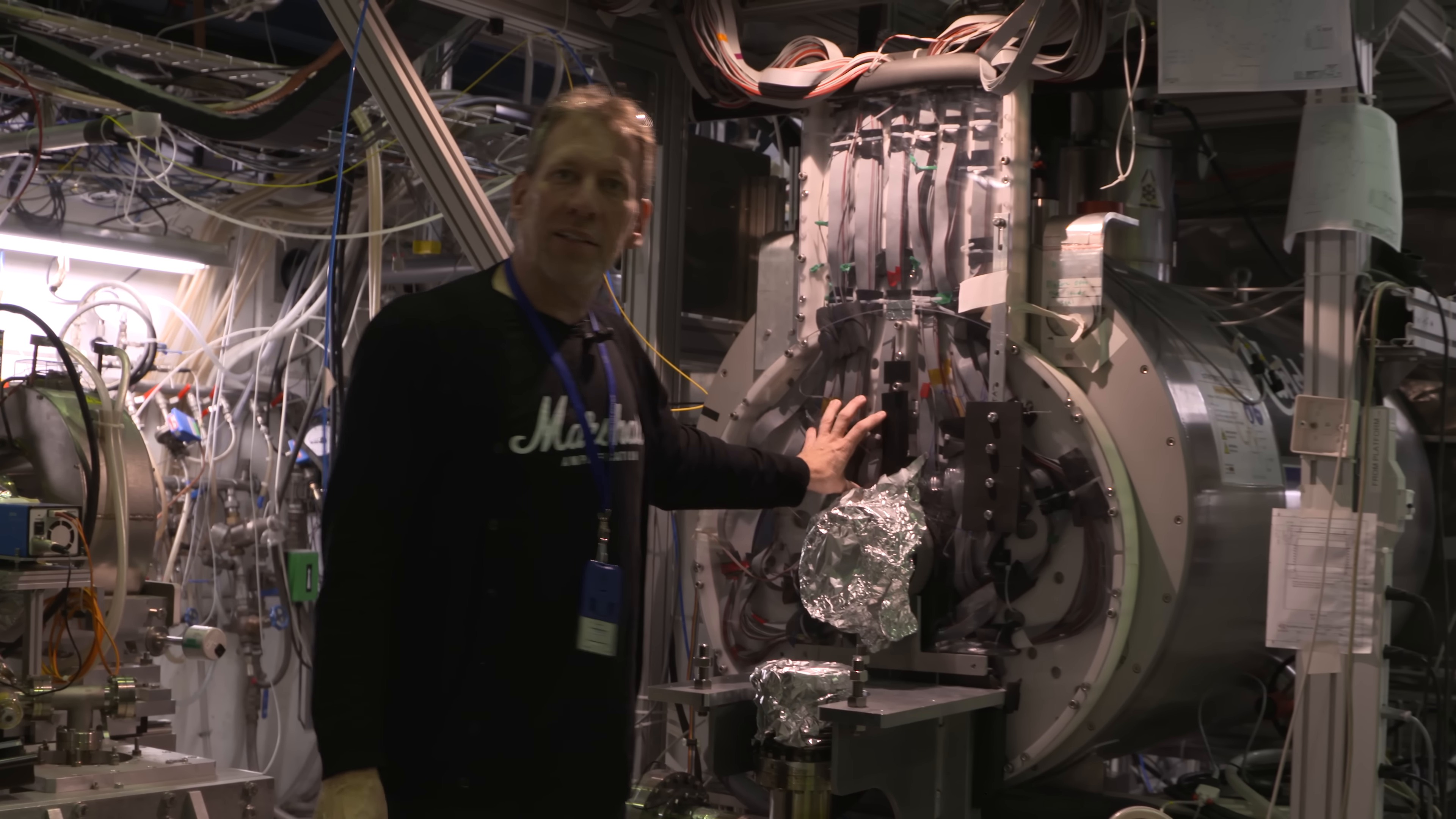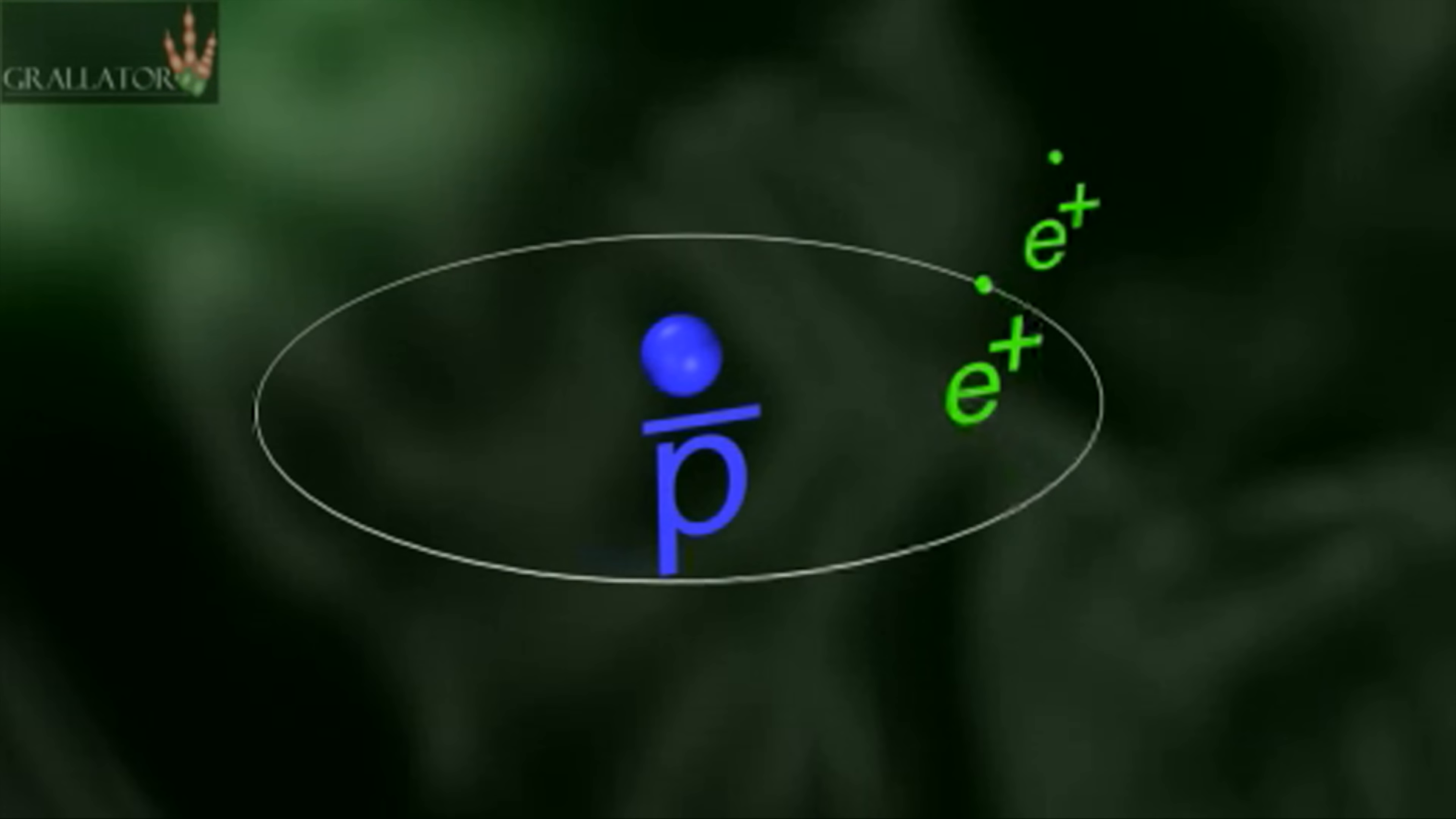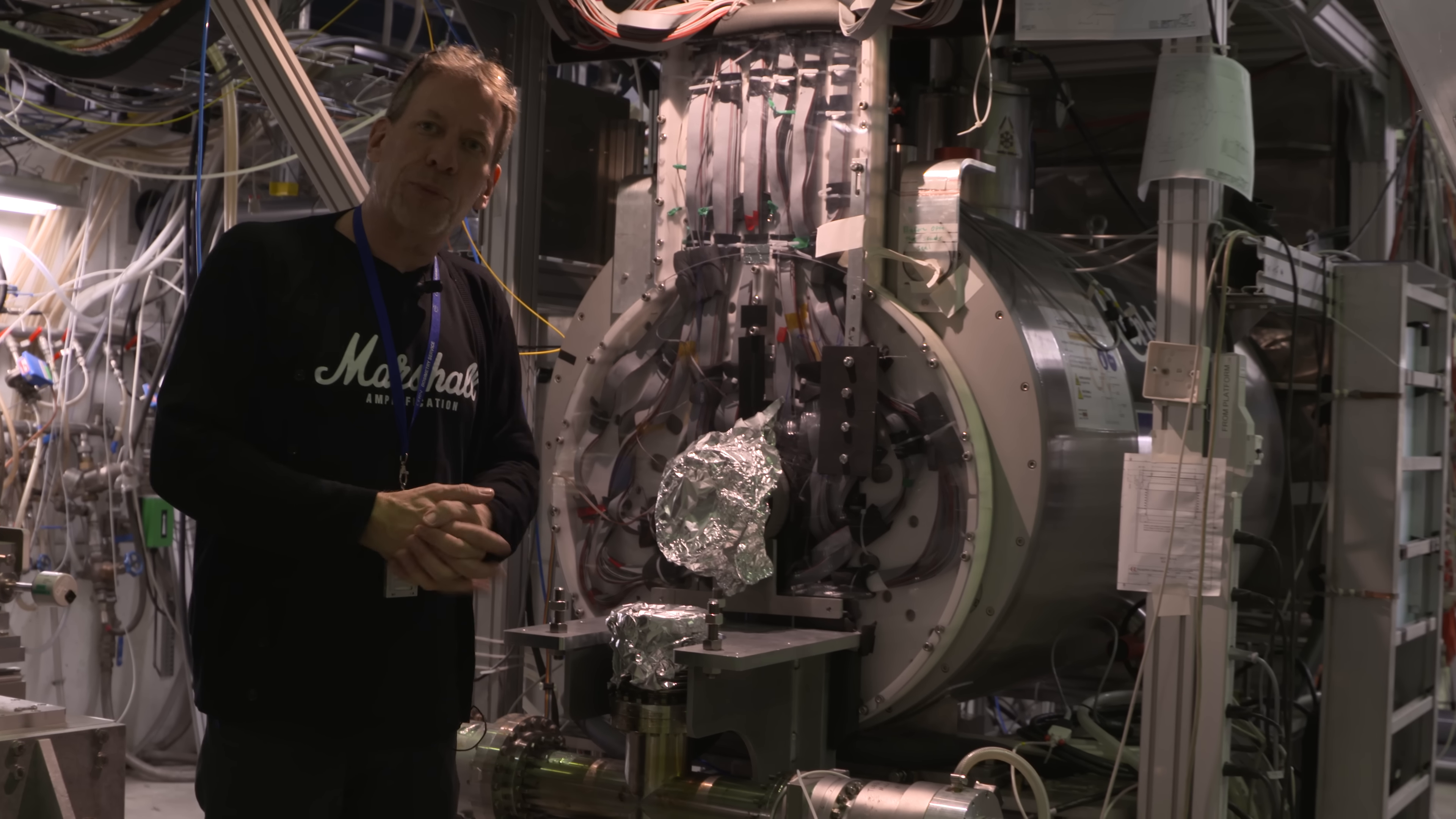We mix the antiprotons and the positrons, which are anti-electrons, inside this magnetic trap. They create antihydrogen, which is then trapped and can't escape. Then we can do any type of experiment we would like